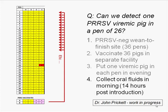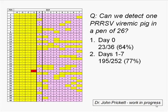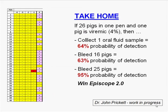The next morning — approximately 14 hours after the viremic pigs went in, assuming not enough time for transmission to others — we collected oral fluids. The question was: can we detect one viremic pig in a pen of 26? Results: 23 PCR-positive oral fluid samples from the 36 pens, meaning we detected 64% of pens with one viremic pig. Following up the next week over 252 samples, we had a 77% detection rate overall.